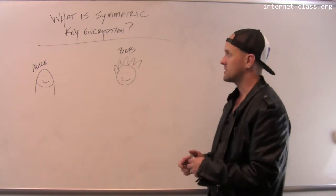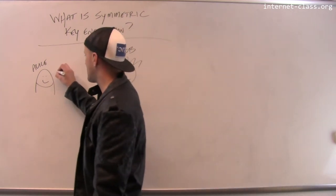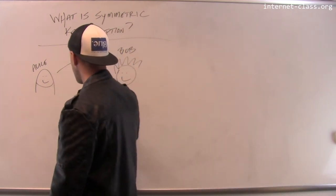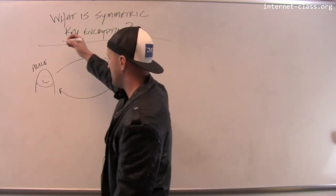And how does symmetric key encryption work? So for symmetric key encryption, the trick is that there is a single key that is used by Alice and Bob to both encrypt and decrypt messages.